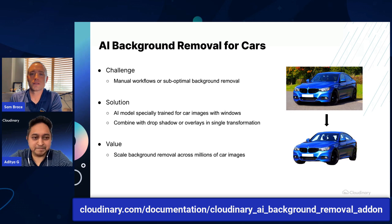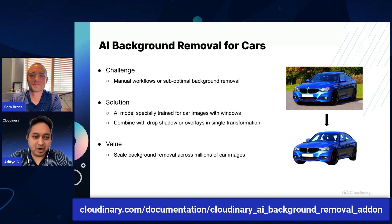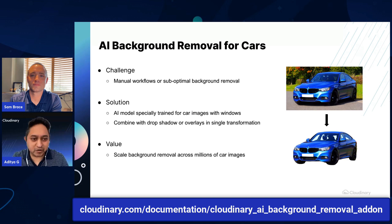As a bonus, many car dealers and car manufacturers also want to apply other effects to these images to make them pop. If some folks remember, in our last video we covered AI-based drop shadow as one of the features. Well, this is a great example of combining two transformations in one single command — not only removing the background but also applying a drop shadow to the car image in a single transformation.